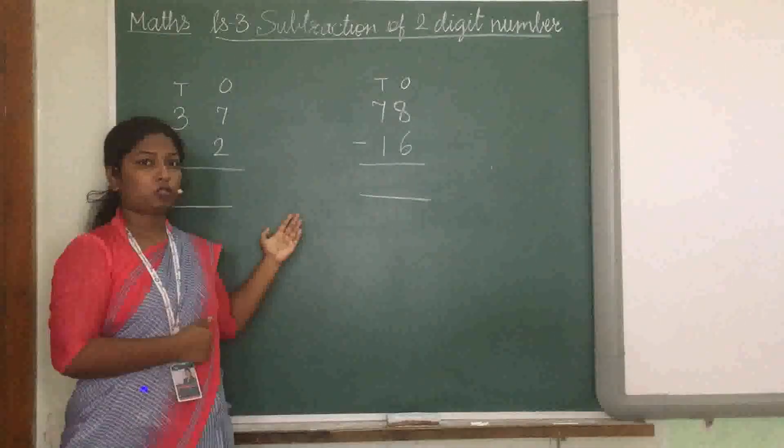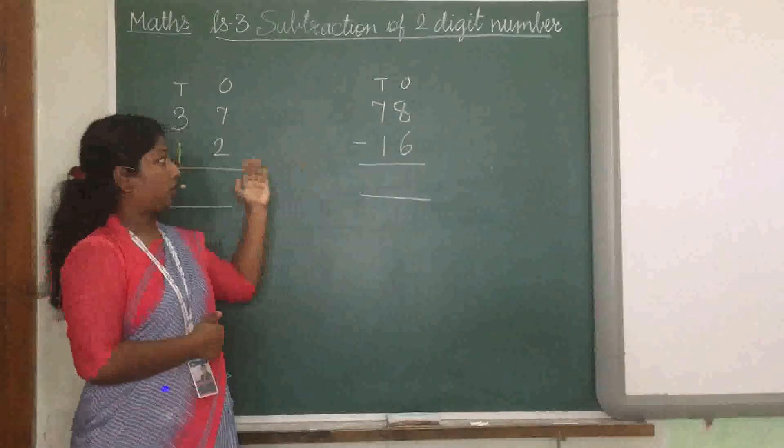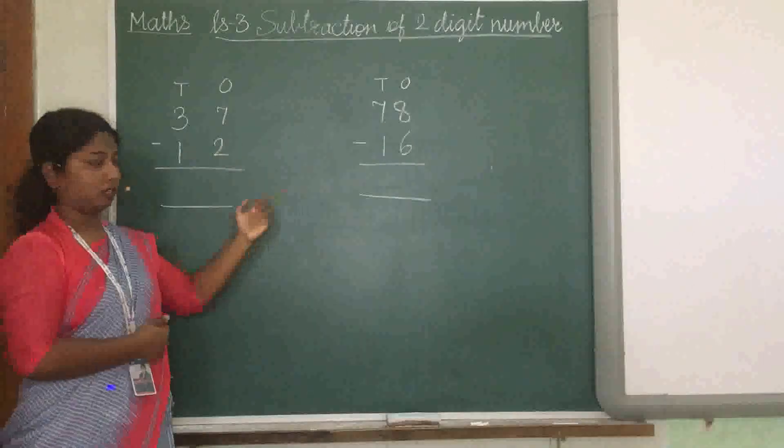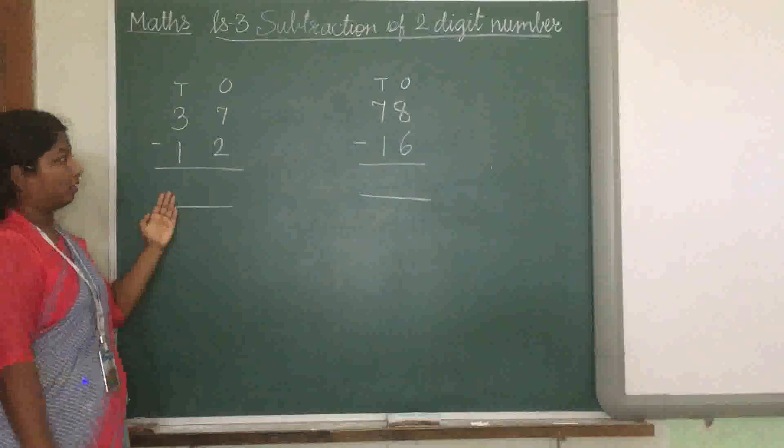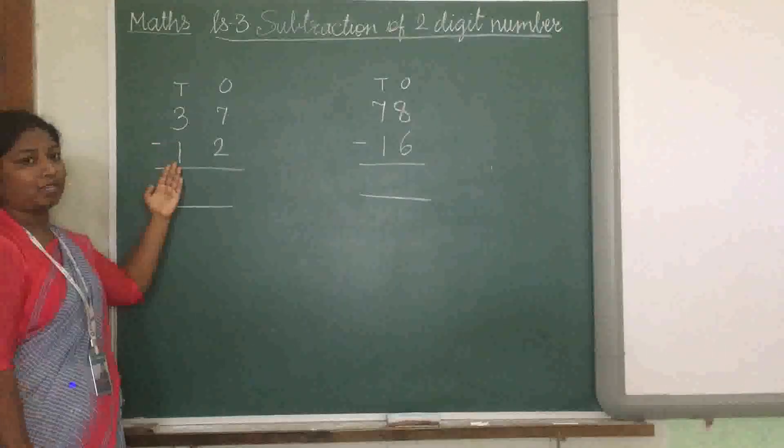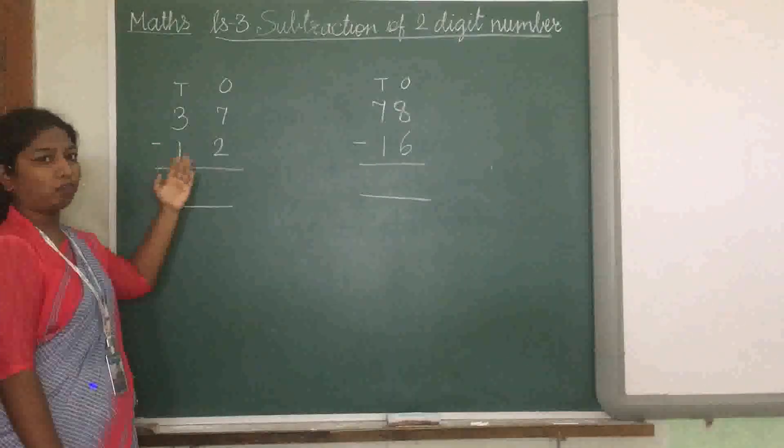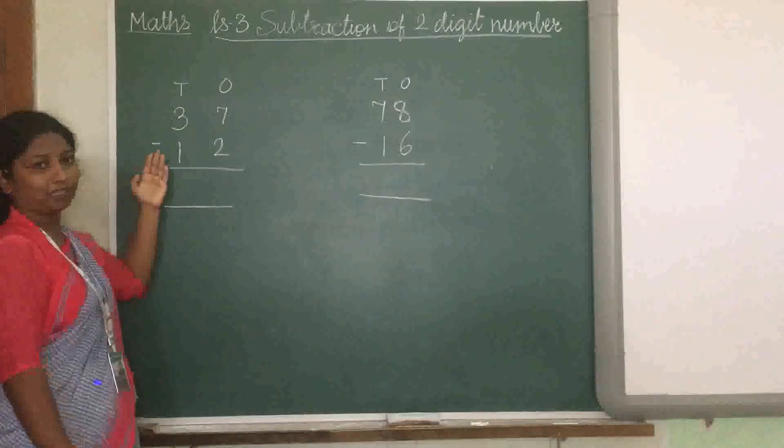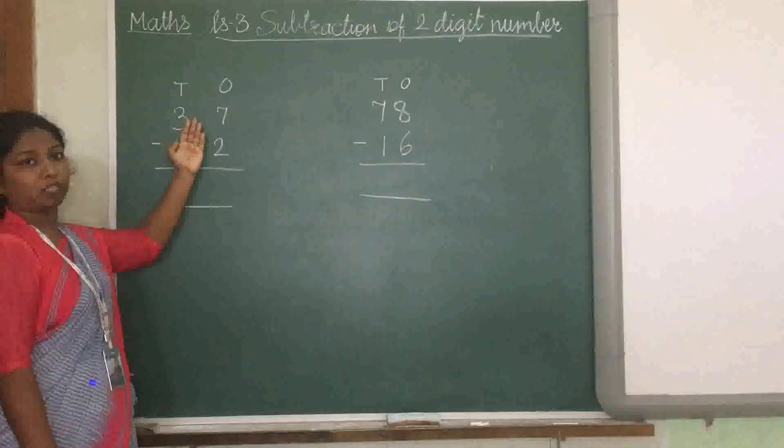And now we are going to solve some of the sums here. So first one is 37 minus 12. We have to solve this. We have to subtract the 12 from 37.